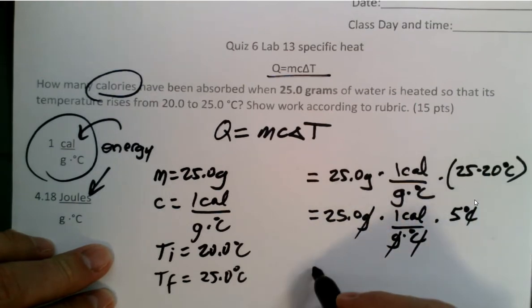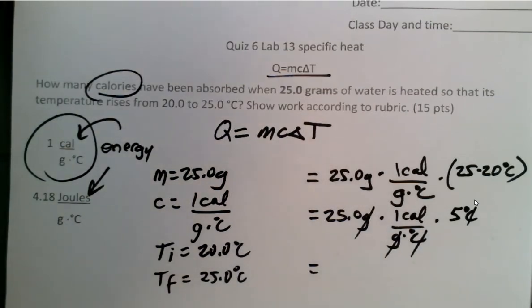We have the value of calories per gram degrees Celsius. We have the value of calorie for our final unit, which is going to make us so very happy.